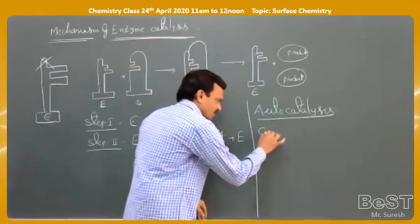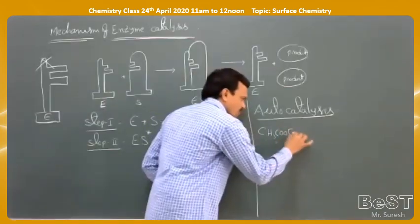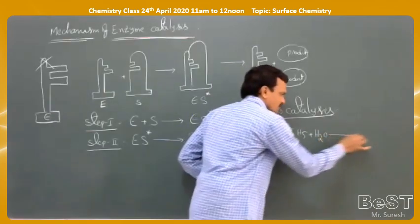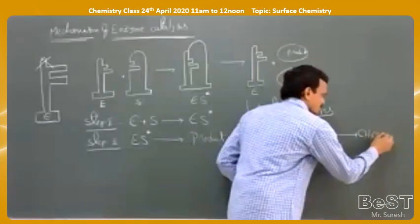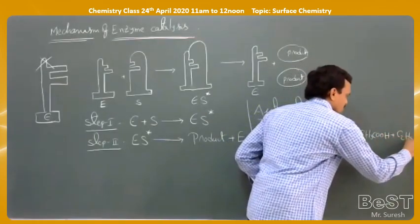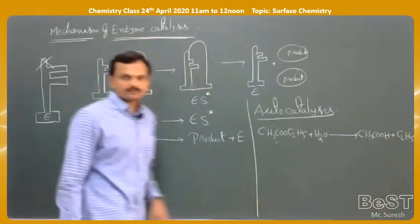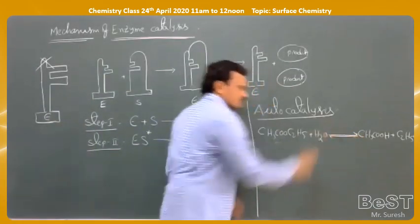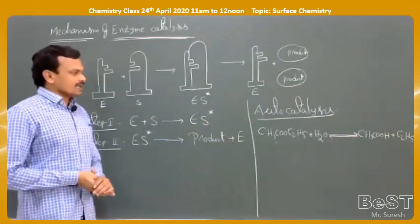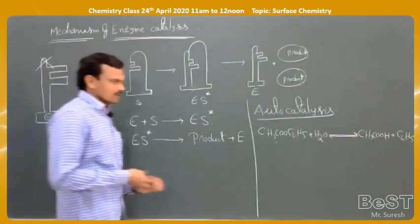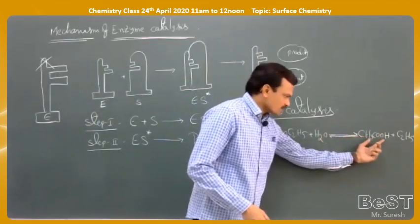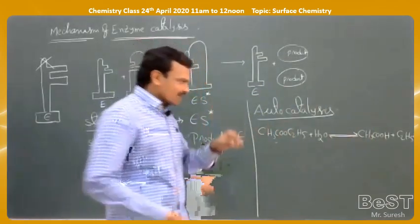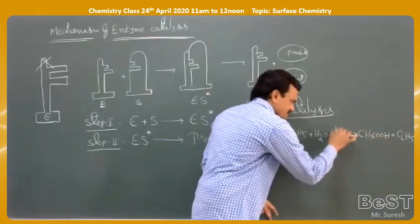For example, take ester hydrolysis: CH3COOC2H5 on hydrolysis produces acetic acid (CH3COOH) plus ethyl alcohol (C2H5OH). No external catalyst is added. But one of the reaction products — acetic acid — ionizes and produces H⁺ ions. These H⁺ ions produced by the acetic acid themselves act as a catalyst.